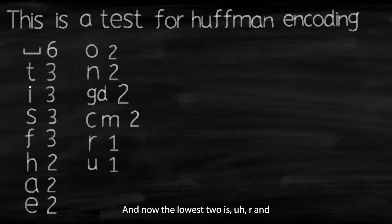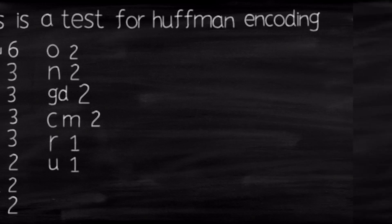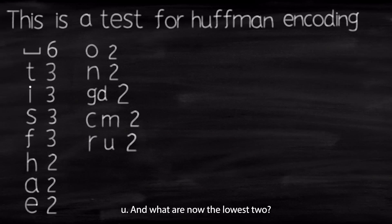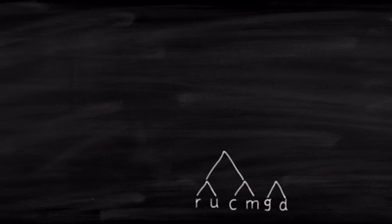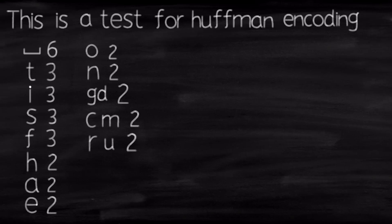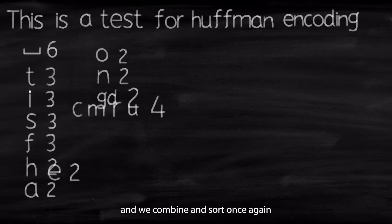And now the lowest two is R and U. And now what are the lowest two now? These two small trees. R, U, and S, and C, M. So now we need to group them together here. And we combine and sort once again. And it seems that we are finally done and there is our tree.